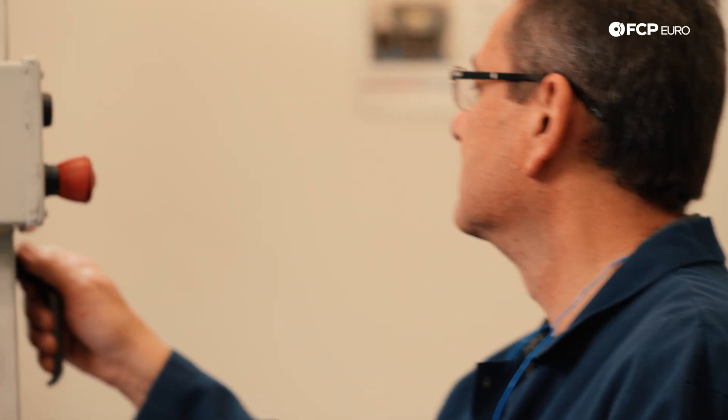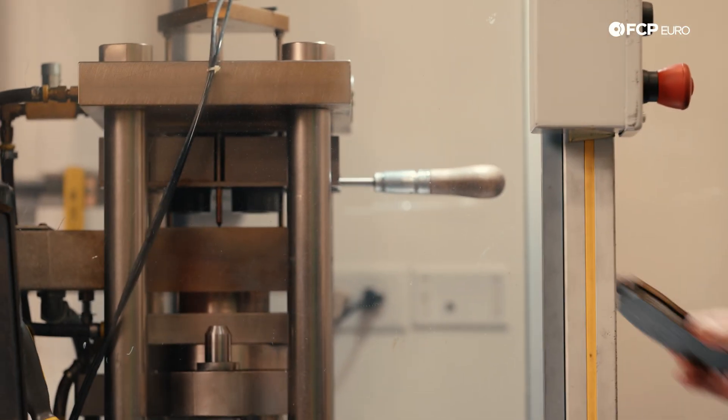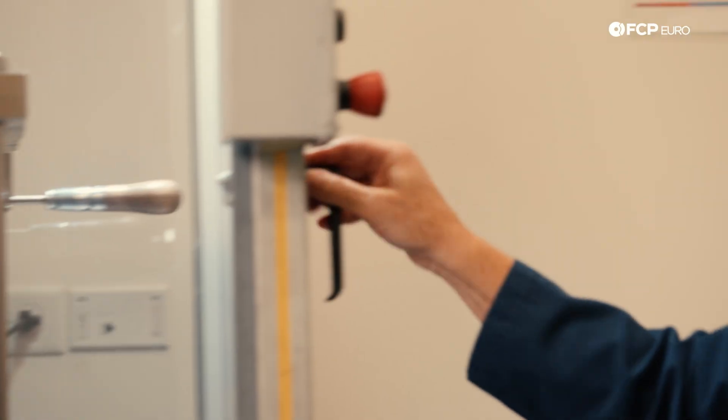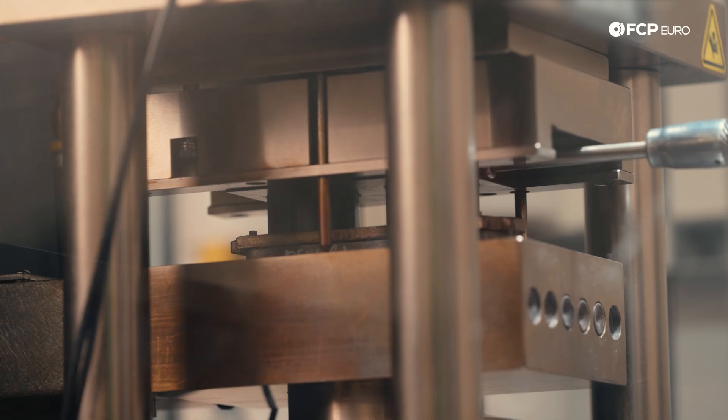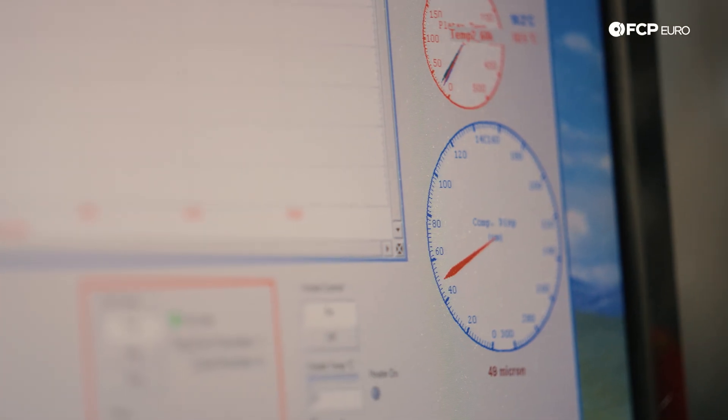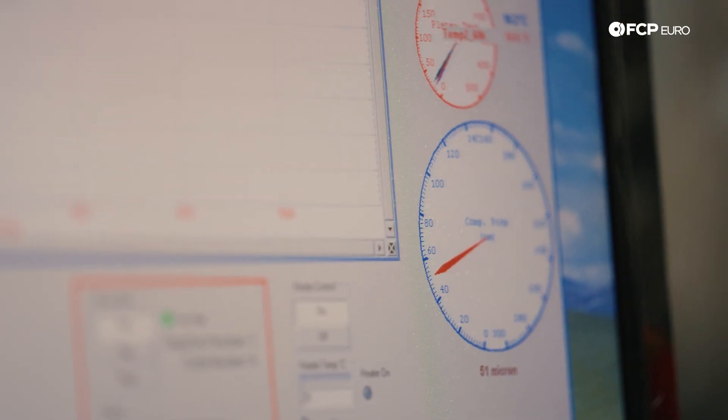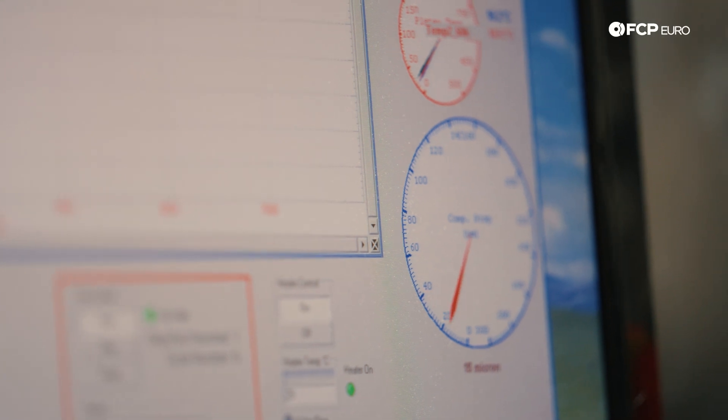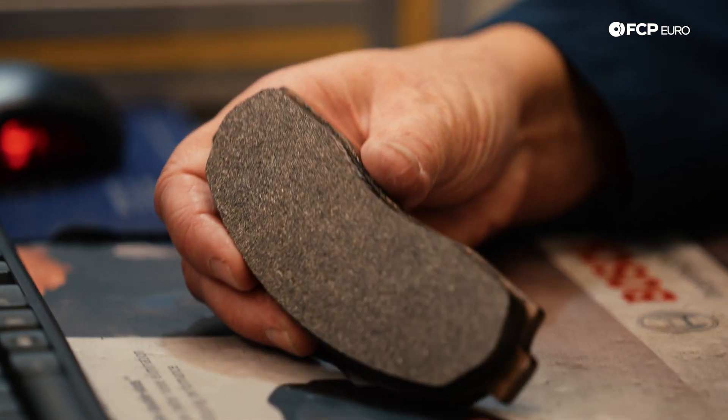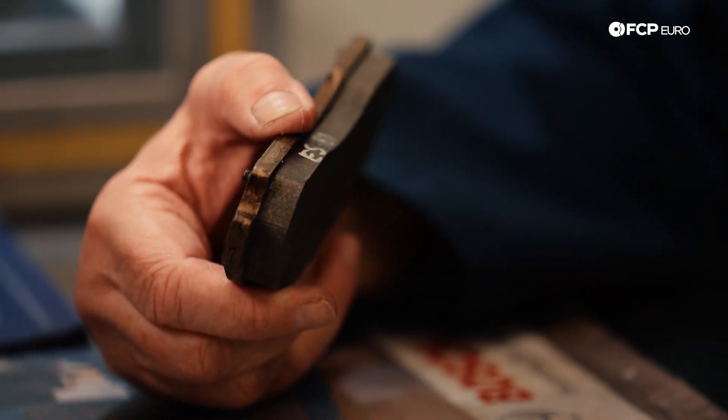A finished pad still needs to be run through quality testing, and with this being the R&D lab, every single pad produced here is run through a myriad of final checks and tests so that engineers are able to look for any production inconsistencies. This is where they test brake pad compressibility, basically how much the material flexes under pressure. Too soft, and you lose pedal feel. Too firm, and you risk noise and harshness. Bosch tunes this precisely to balance comfort and control across every batch.